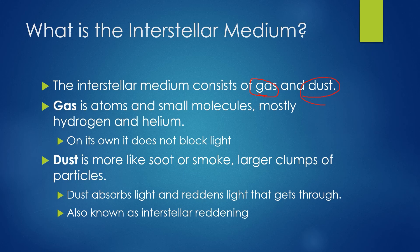Dust is more like soot or smoke. It consists of clumps of atoms and molecules, making it able to actually block light from a distance. The dust will absorb a beam of light and scatter particles having diameters comparable or larger than the wavelengths of the light involved. The amount of obscuration of light increases with decreasing wavelength, meaning the smaller the wavelength — the bluer or more energetic it is — the more it will be scattered or absorbed, allowing redder or wider wavelengths to get through easily. This is known as interstellar reddening.